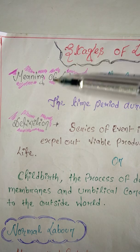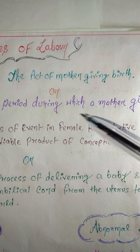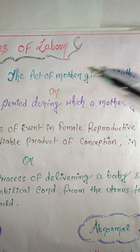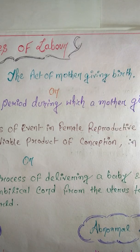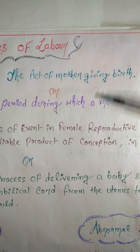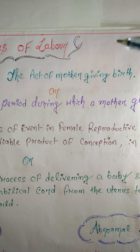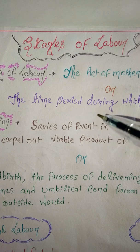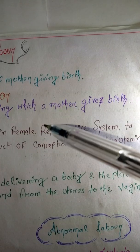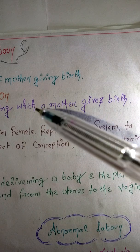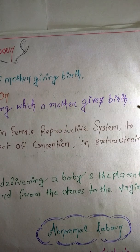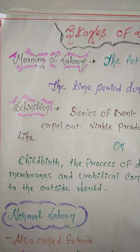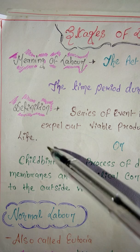First, let's start with the meaning of labor. Labor means the act of a mother giving birth — the process of childbirth. It is also defined as the time period during which a mother gives birth. That whole time period is called labor.